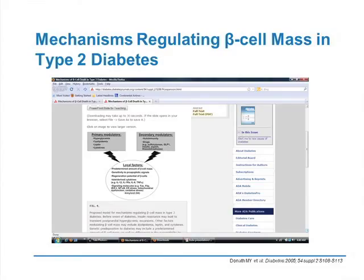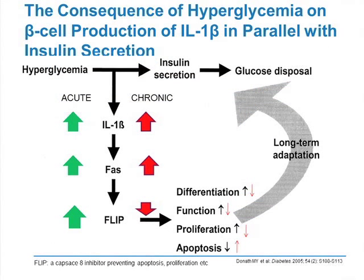Primary modulators affecting the tissues include hyperglycemia, dyslipidemia, leptin, and cytokines. Secondary modulators include autoimmunity and the drugs we have. These effects work on the beta cell as well. The consequences of hyperglycemia on beta cell function can be acute or chronic. In the acute situation, hyperglycemia is associated with increased inflammatory factors causing increased differentiation, function, proliferation, and decreased apoptosis of the beta cell. But chronic hyperglycemia does the exact opposite — it causes decreased differentiation, function, and proliferation, and increased apoptosis. So acute hyperglycemia has diametrically opposite reactions to chronic hyperglycemia.